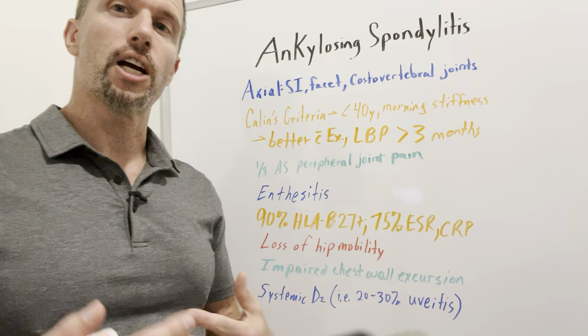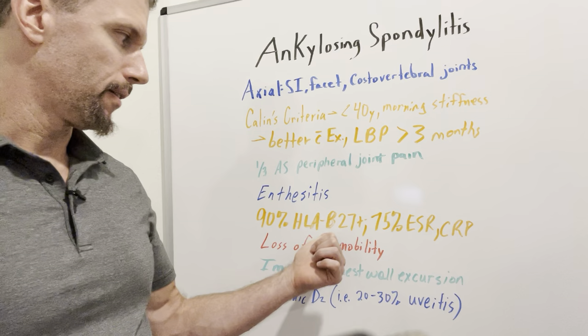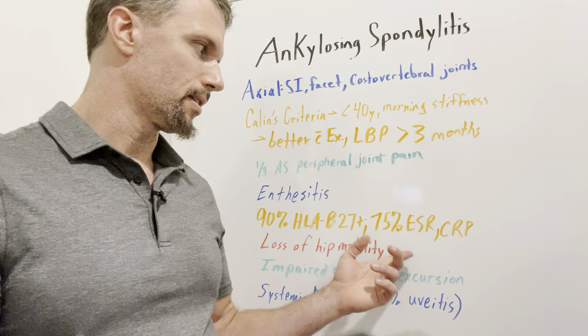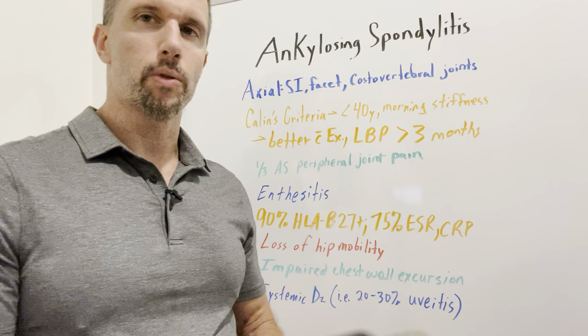90% of people with ankylosing spondylitis have HLA-B27 in their blood, making the connection to autoimmune disease. There's a lot of inflammation in the body, so it shows up in other blood factors as well. You can see elevated erythrocyte sedimentation rate (ESR) and C-reactive protein (CRP).